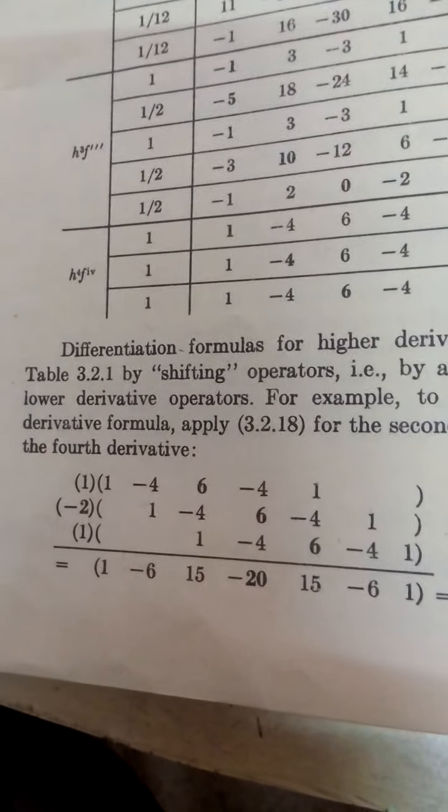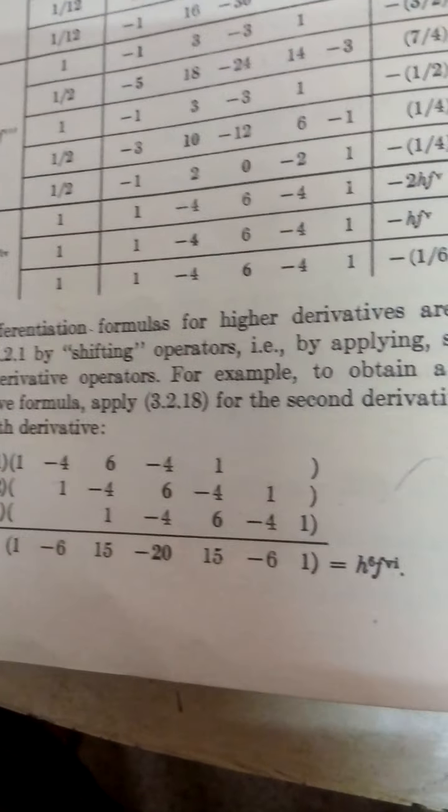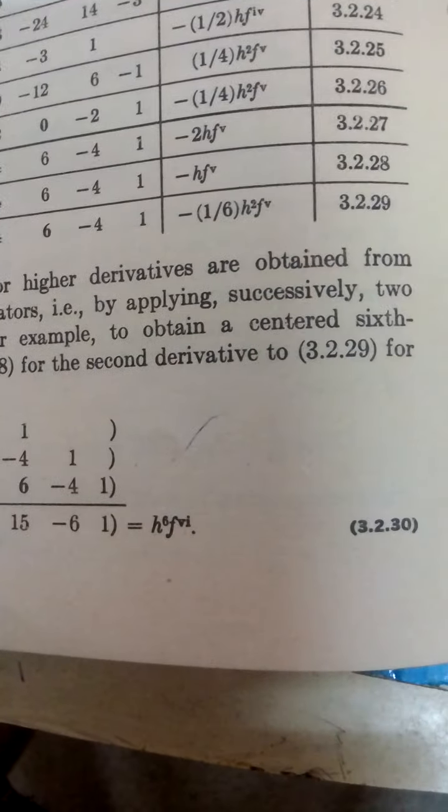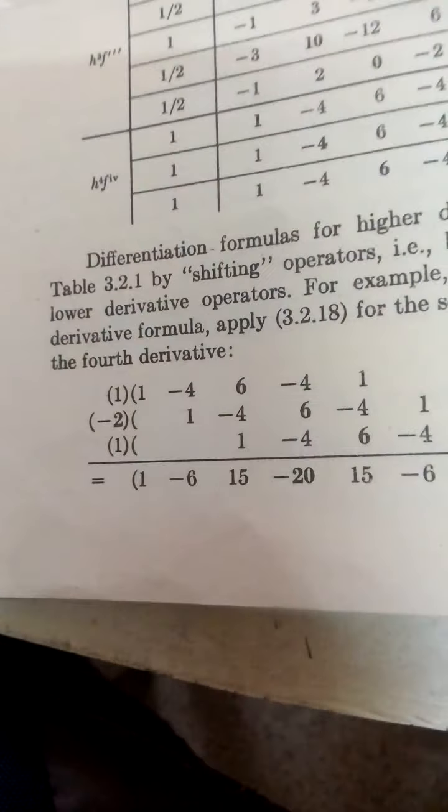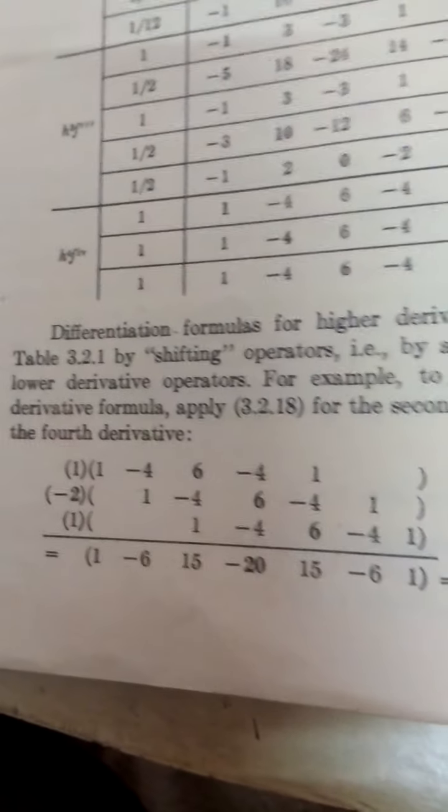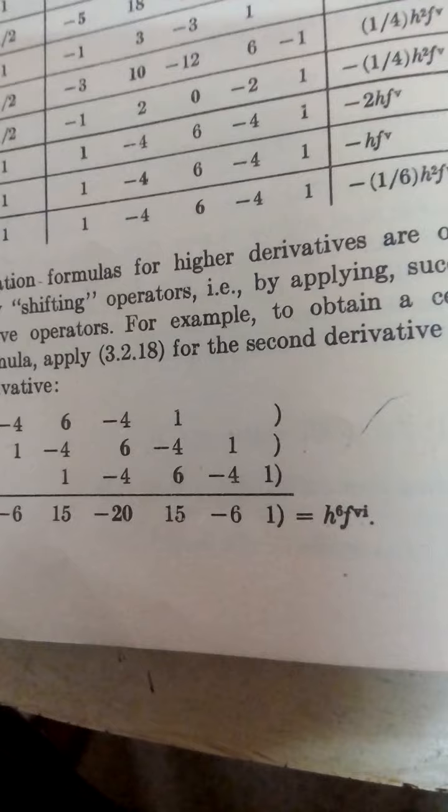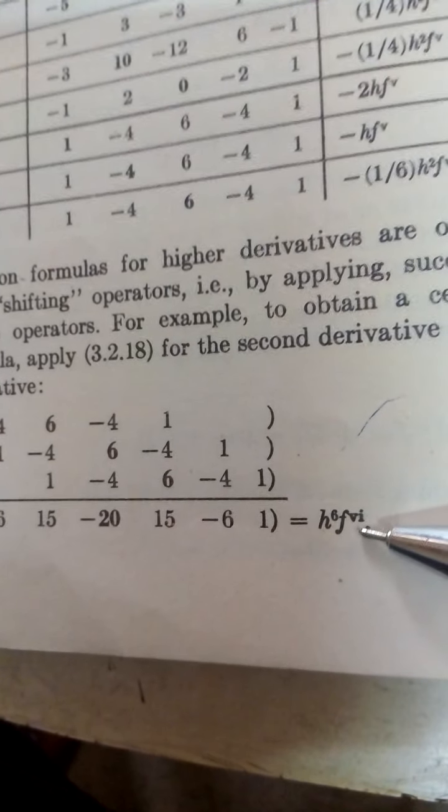I will show you this write-up. Now, this is how to find out the fifth derivative, sixth derivative. To find out sixth derivative, the example is given. Now, how to get this. This is the error of the order of this.